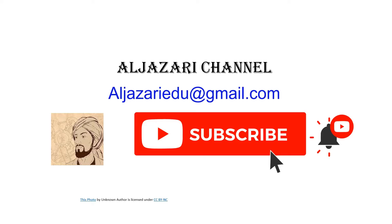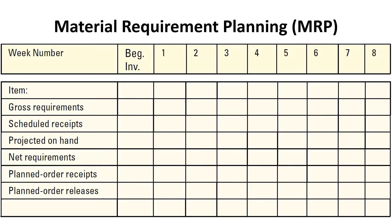Before explaining how to create a material requirement plan, the MRP can be created in the shown table which contains the following. The gross requirement is the total expected demand for an item or raw material during each time period.